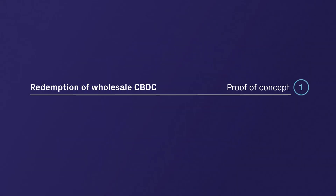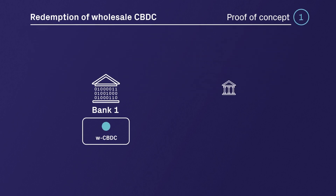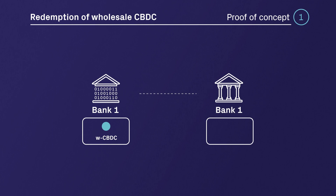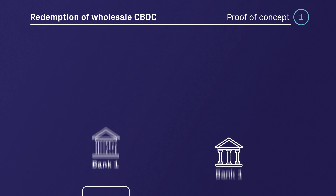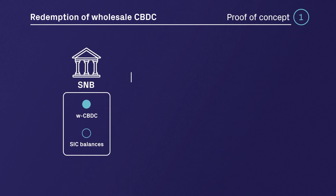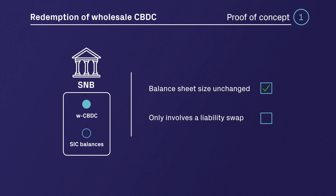As part of proof of concept number one, we investigated the redemption of wholesale CBDC use case. A redemption of wholesale CBDC is an exchange of wholesale CBDC against SIC balances, so it's the opposite transaction to an issuance of wholesale CBDC. From the banks' and the central bank's perspective, the issuance and redemption of wholesale CBDC leaves the balance sheet size unchanged and only involves an asset or liability swap.